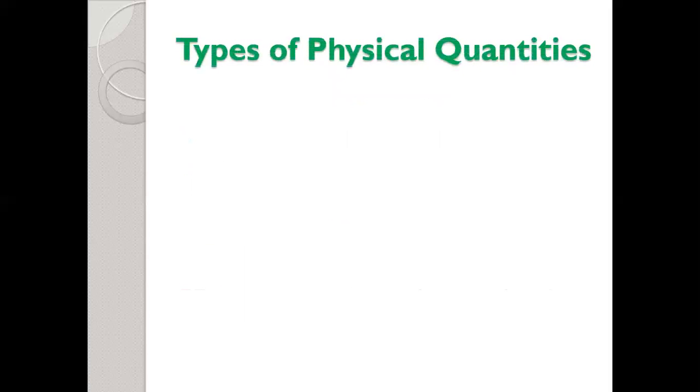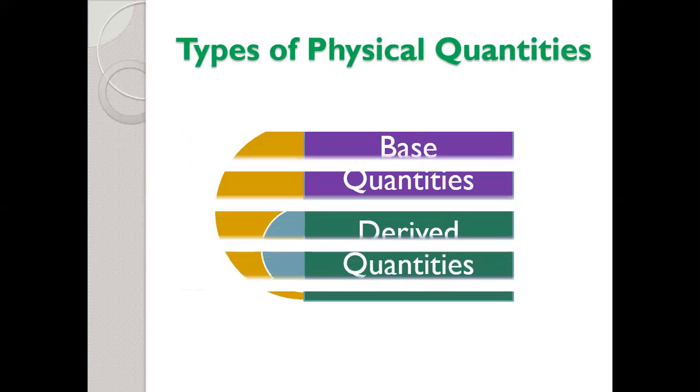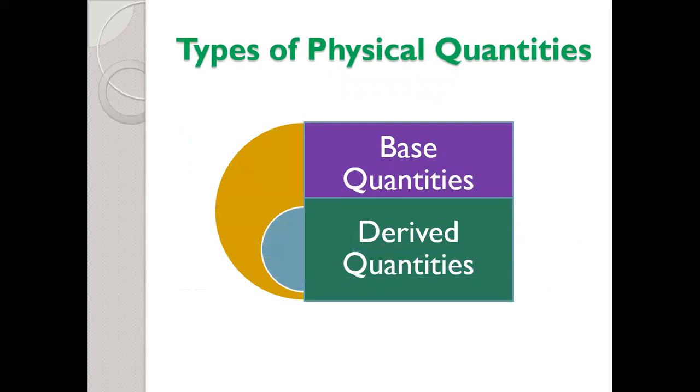Next, we will discuss the types of physical quantities. There are two types of physical quantities: base quantities and derived quantities.